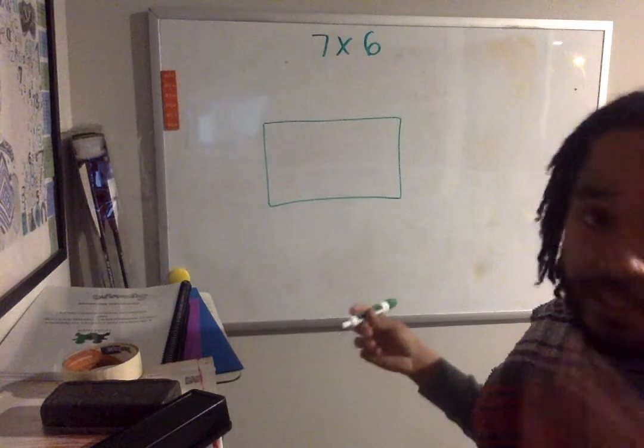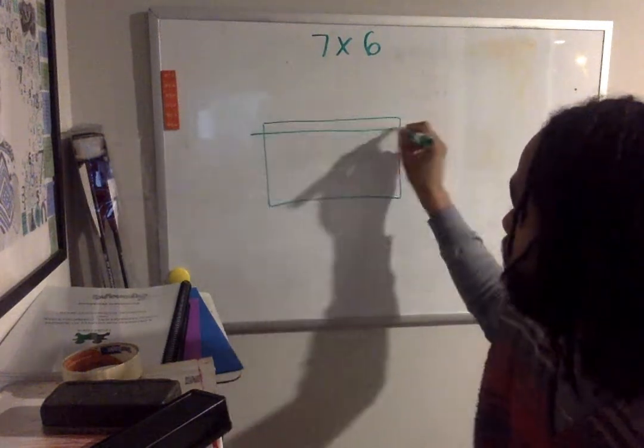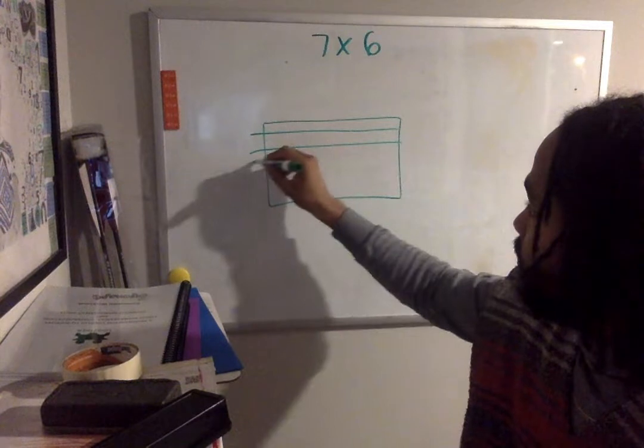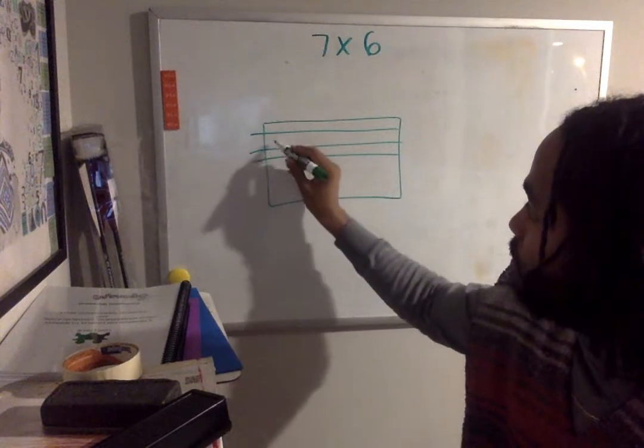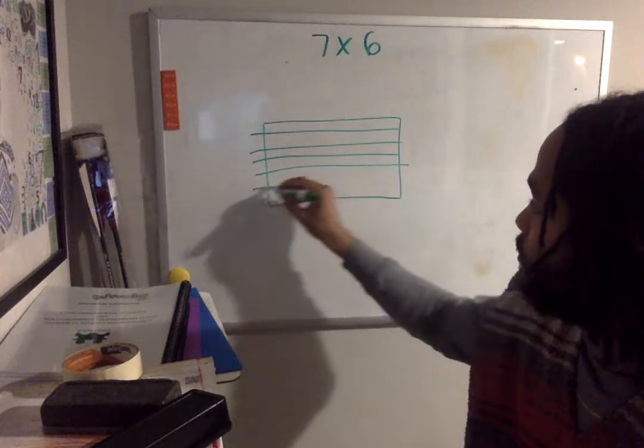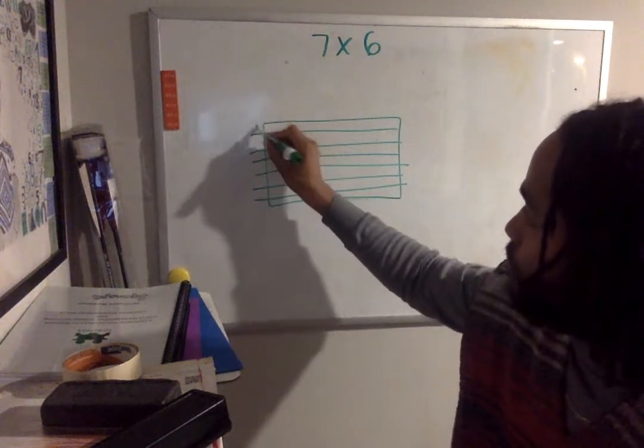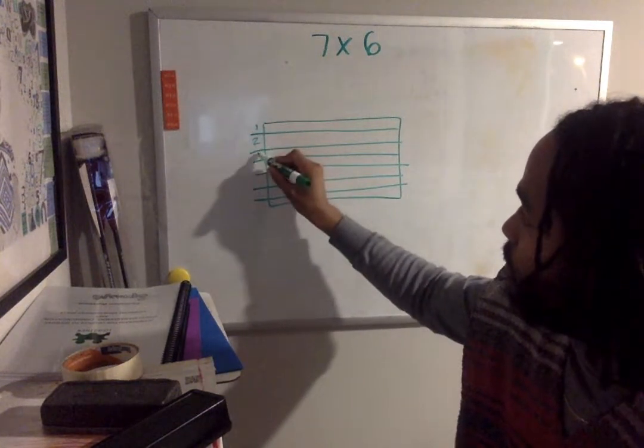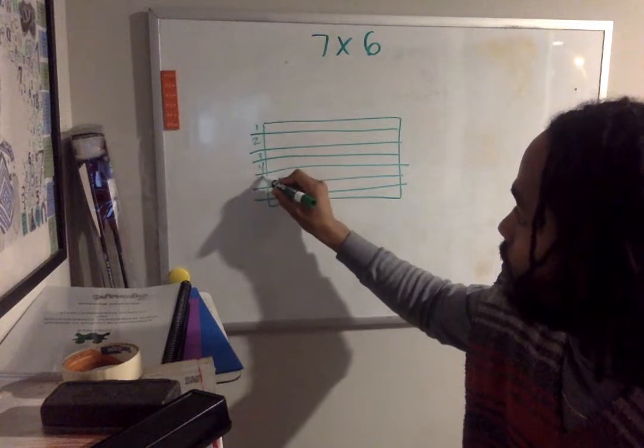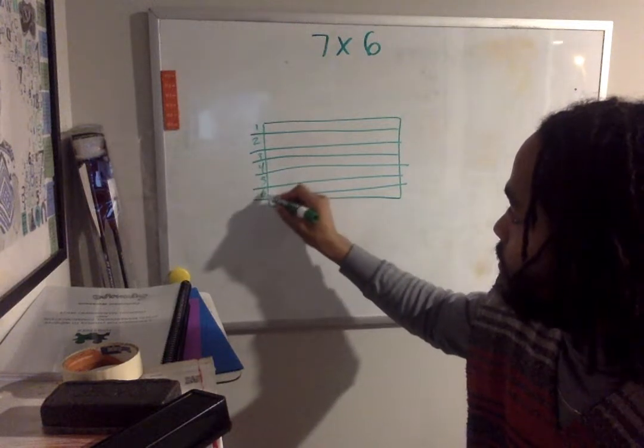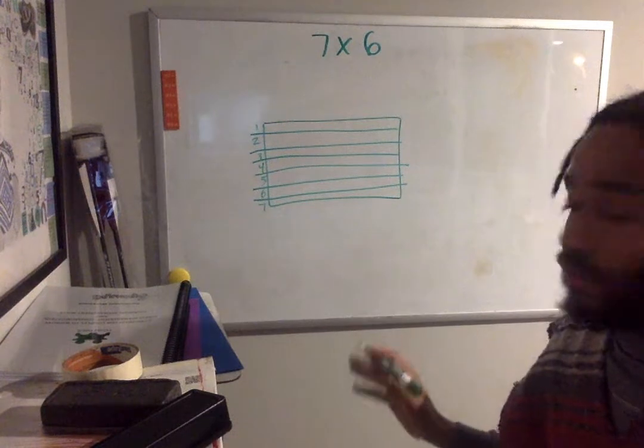I've been showing the students this and labeling. I'm going to make my rows first. I need seven rows. So I have seven rows and I'm going to count: one, two, three, four, five, six, and seven. I have my seven rows.